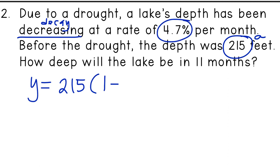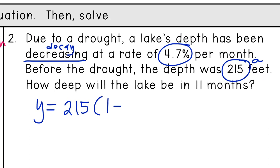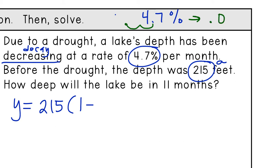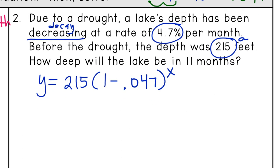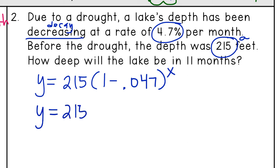So let's start with our equation: y equals — the initial value is 215 feet — parenthesis one minus, since it's decay. Our rate is 4.7 percent; remember you have to change that to a regular decimal by moving the decimal twice, so 4.7% becomes 0.047, to the x power.